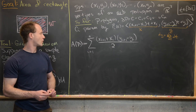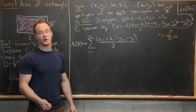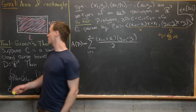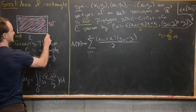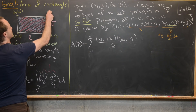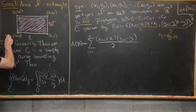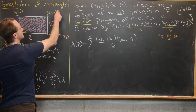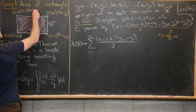Now we apply this polygon area formula to our rectangle. We place it in the plane with the origin at one corner: vertex X1,Y1 = (0,0); X2,Y2 = (L,0); X3,Y3 = (L,W); and X4,Y4 = (0,W). The area of the rectangle R will equal this formula with N=4.